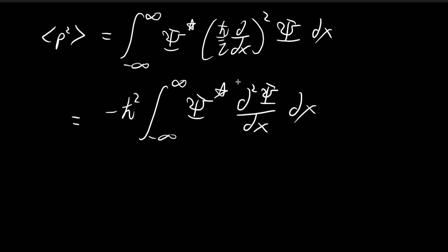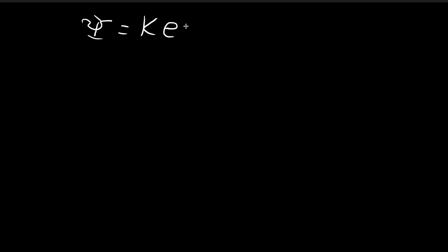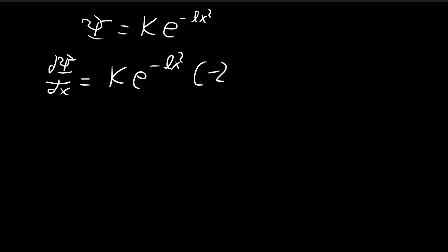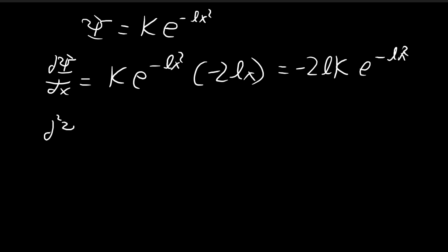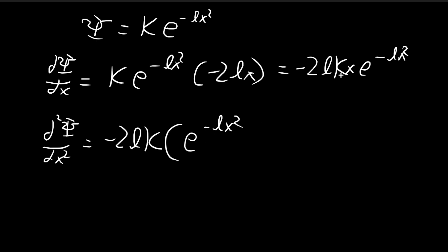In order to find this integral, we need to first find the second derivative of the wave function. The wave function is k times e to the power of negative lx squared. The first derivative is found by applying the chain rule — differentiating the exponent outside. Then taking the second derivative, the constants stay behind. There should be an x here, so we differentiate the x and retain this term, then retain the x and differentiate the other term.